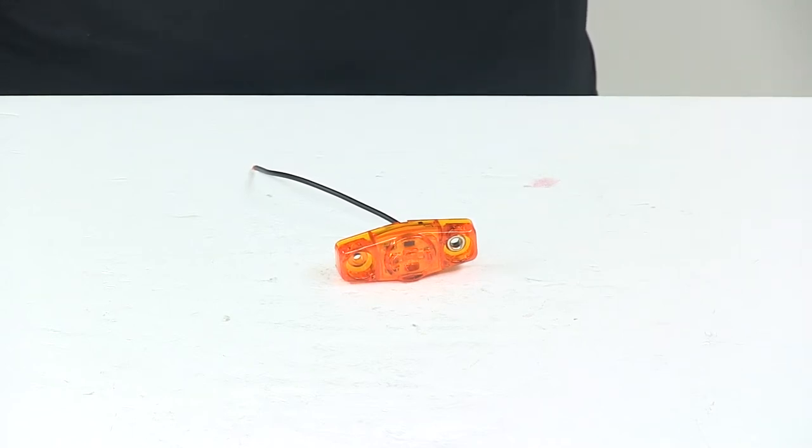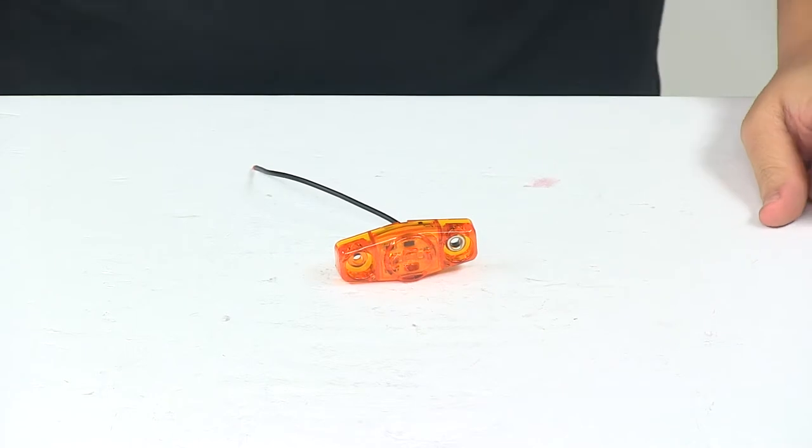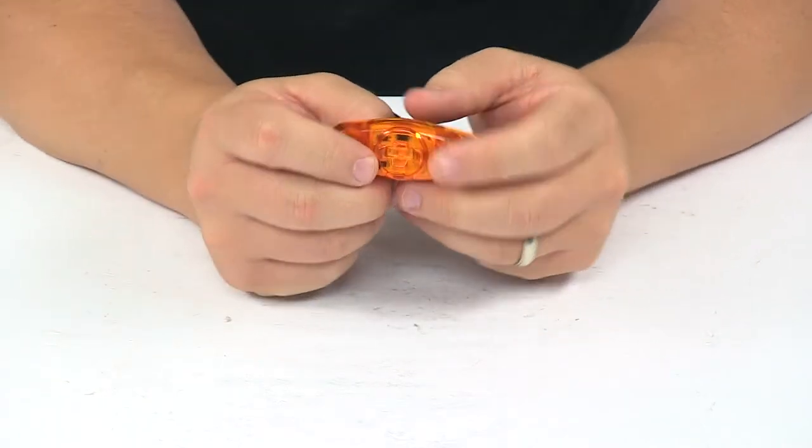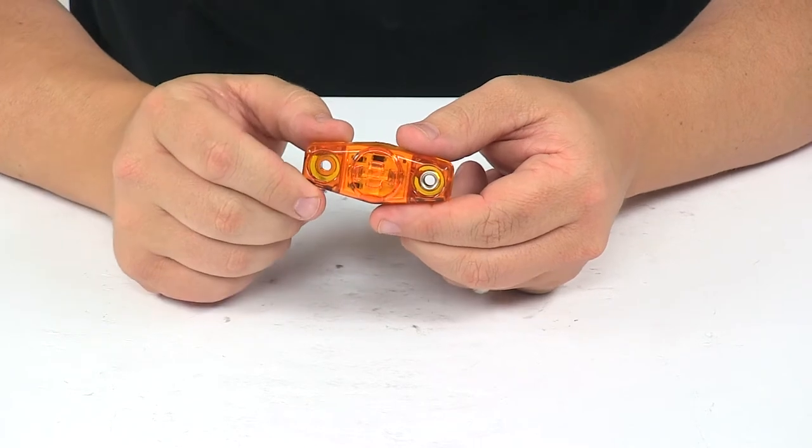Today we're taking a look at the Optronics Mini Sealed LED Marker Clearance Light. This sonically sealed waterproof light functions as a side marker or clearance light for your trailer.